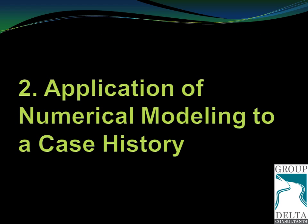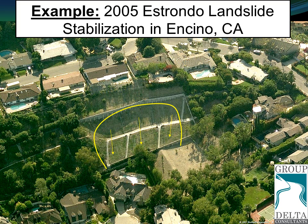In the second part of this presentation, I'd like to show the application of numerical modeling to a specific case history: the Estorondo landslide stabilization in Encino, California. Approximately 50 years ago, a canyon was filled, creating a slope approximately 100 feet in height. Water would accumulate in this fill and cause repeated failures of the slope. In 1998, the failure involved roughly the lower two-thirds of the slope, endangering the home at the base. The main design concern was a catastrophic enlargement of the failure that would involve the homes at the top of the slope.